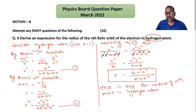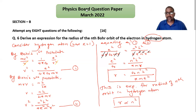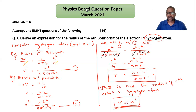From this expression, ε₀, h, π, m, and e² are all constants, so we can write r is proportional to n². The radius of Bohr's orbit is directly proportional to the square of the principal quantum number n. If the question asks to show that the radius is directly proportional to the square of the principal quantum number, you can write up to this point.